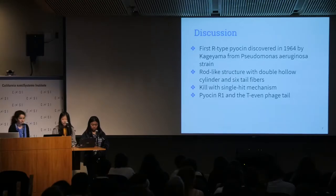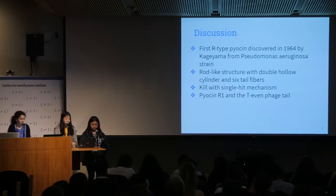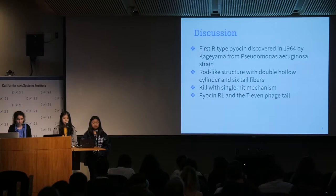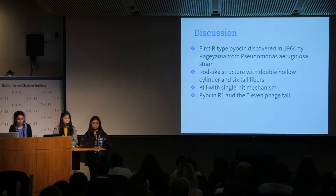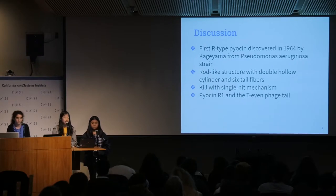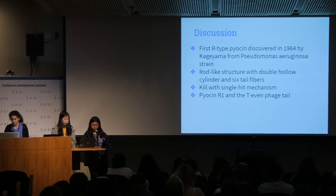The first R-type Pyocin was discovered in 1964 by Kageyama from the Pseudomonas aeruginosa strain. The R-type Pyocin has a rod-like structure with a double hollow cylinder and six tail fibers. The double hollow cylinder consists of a sheath and a core; the sheath is contractile so that the core can penetrate the bacterial membrane to kill the bacteria. It also has a single-hit mechanism and can kill a bacterium with a single hit. The Pyocin R1 and the T4 even phage tail have been proven to have close morphological resemblance, and the T-even phage is also known as the E. coli phage.